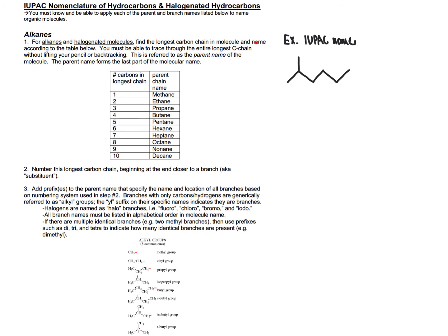Step one: find the longest carbon chain in the molecule and name that chain according to the table. The table names the longest carbon chain based on the number of carbons: methane for one carbon, ethane for two, propane for three, butane for four, all the way up to 10 carbons. The longest carbon chain is what you can trace through without lifting your pencil or backtracking.